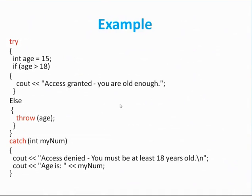This is another example. Here we have taken in a try block: int age equal to 15. If age is greater than 18, then access is granted — you are old enough. If the age is 17, then 17 is not greater than 18, so it will throw the exception. When this exception is thrown, the control goes into the catch block. The variable myName maps to whatever age is provided — it is 17. Then it outputs: access is denied, you must be at least 18 years old, and it prints the age, which is 17.